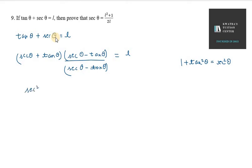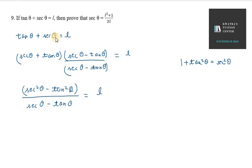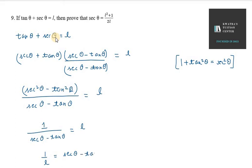Here we have sec squared theta minus tan squared theta, which uses the identity (a plus b)(a minus b). So we get sec theta minus tan theta equal to 1 over L. Looking at the identity, sec squared theta minus tan squared theta equals 1, so 1 over (sec theta minus tan theta) equals L. This is our second equation.